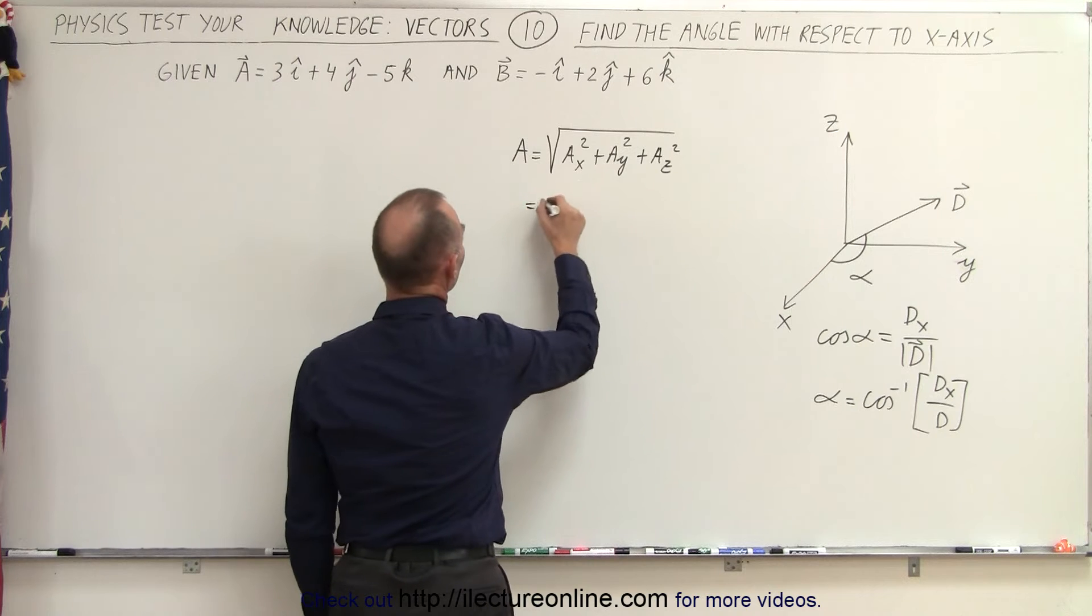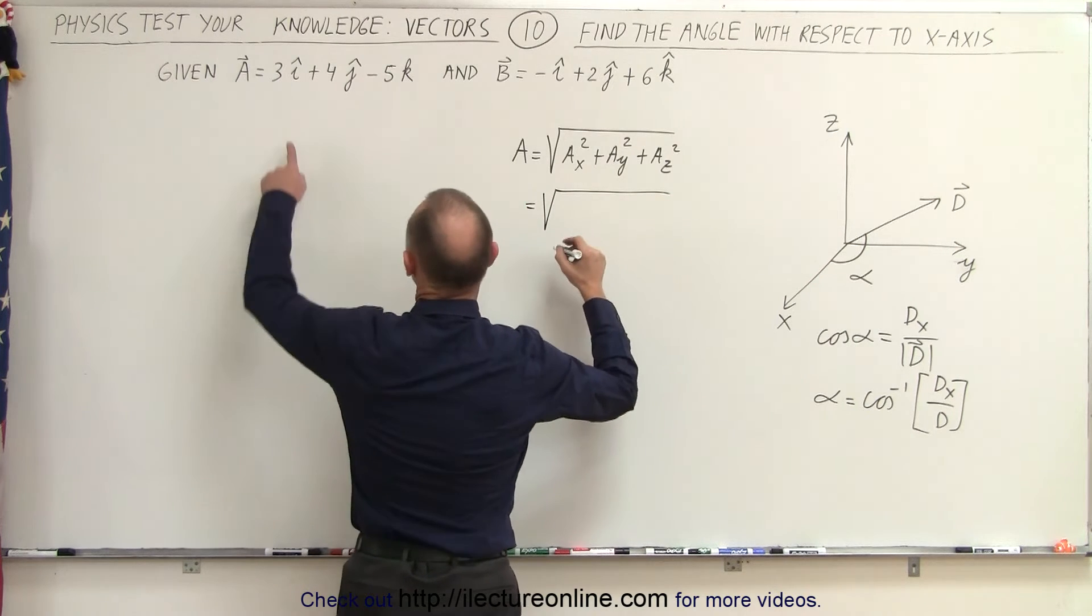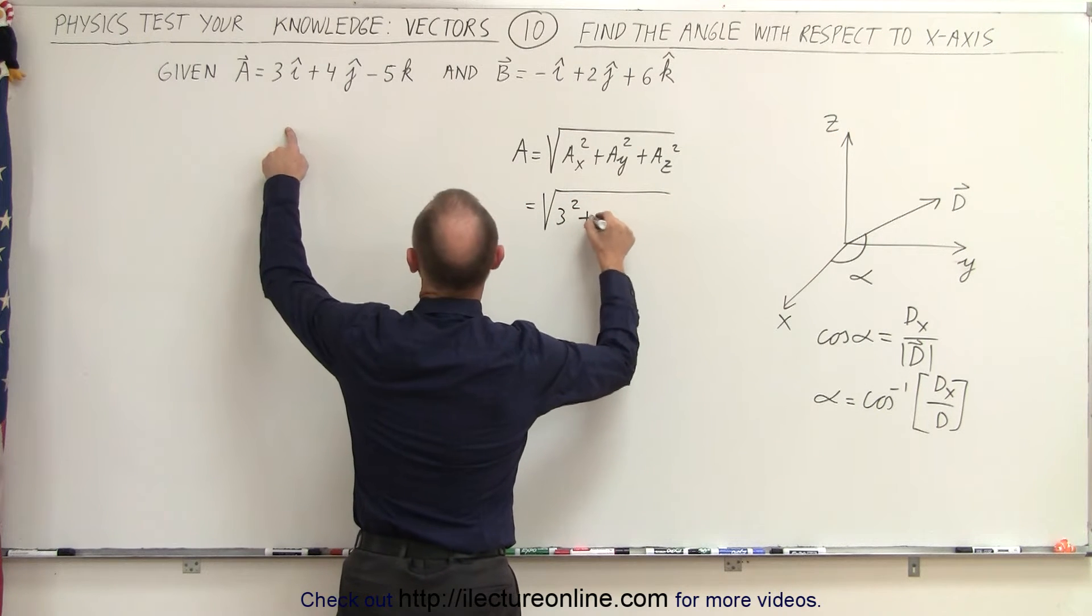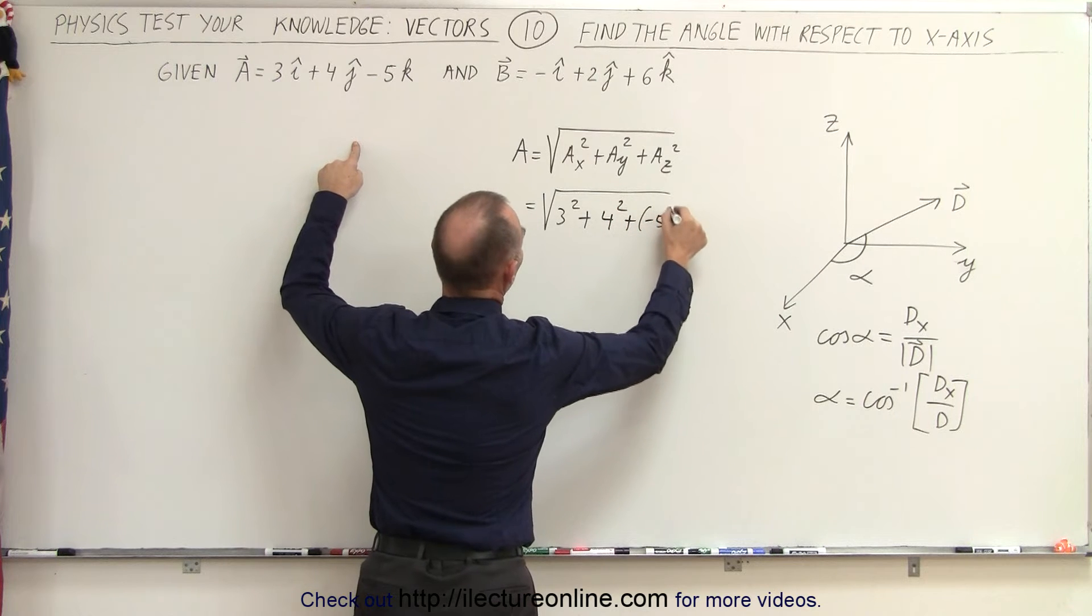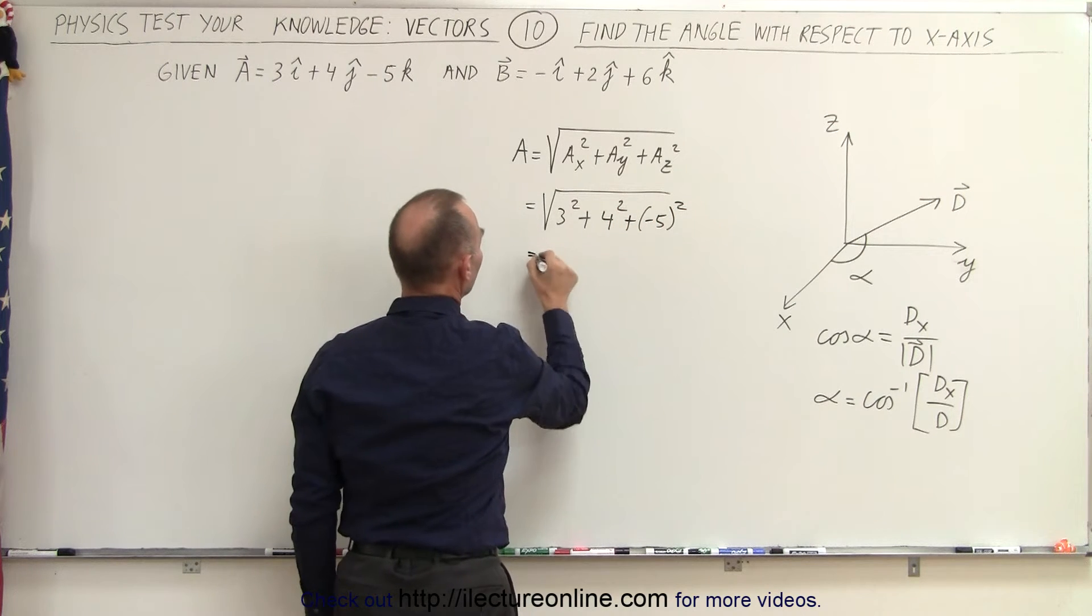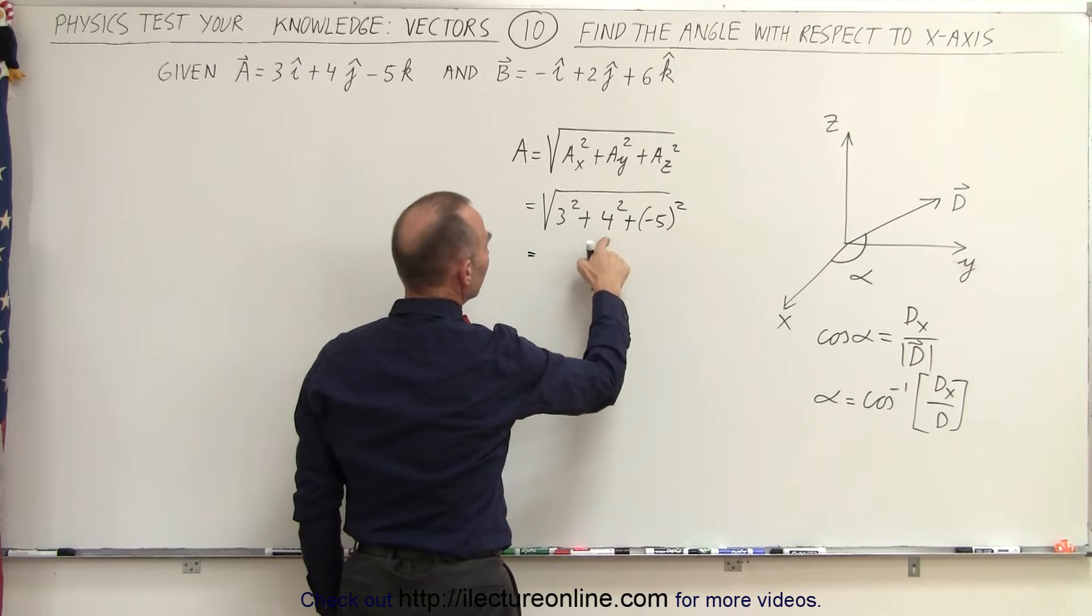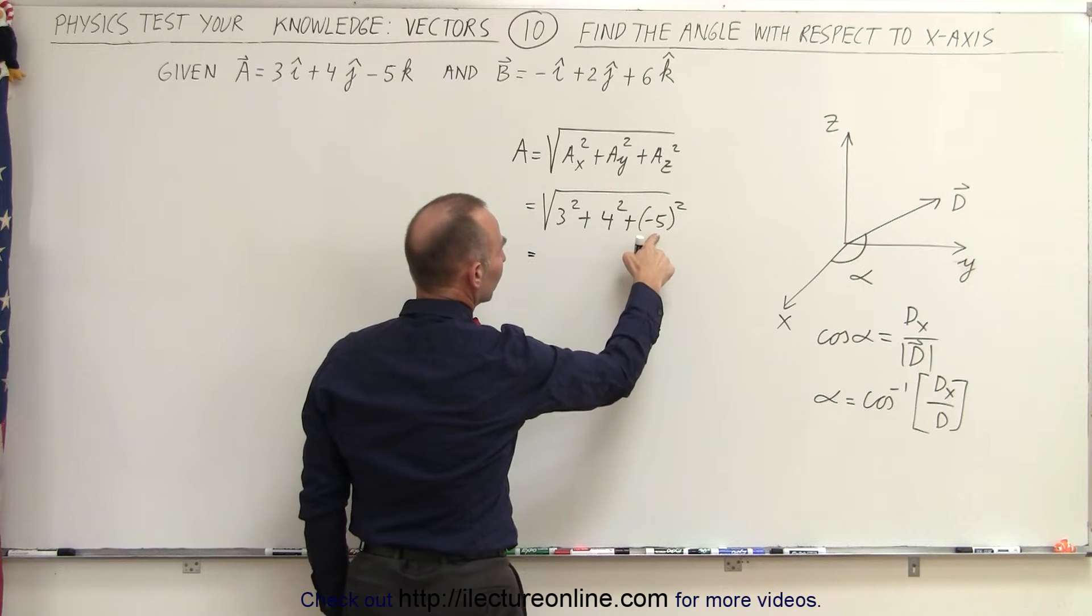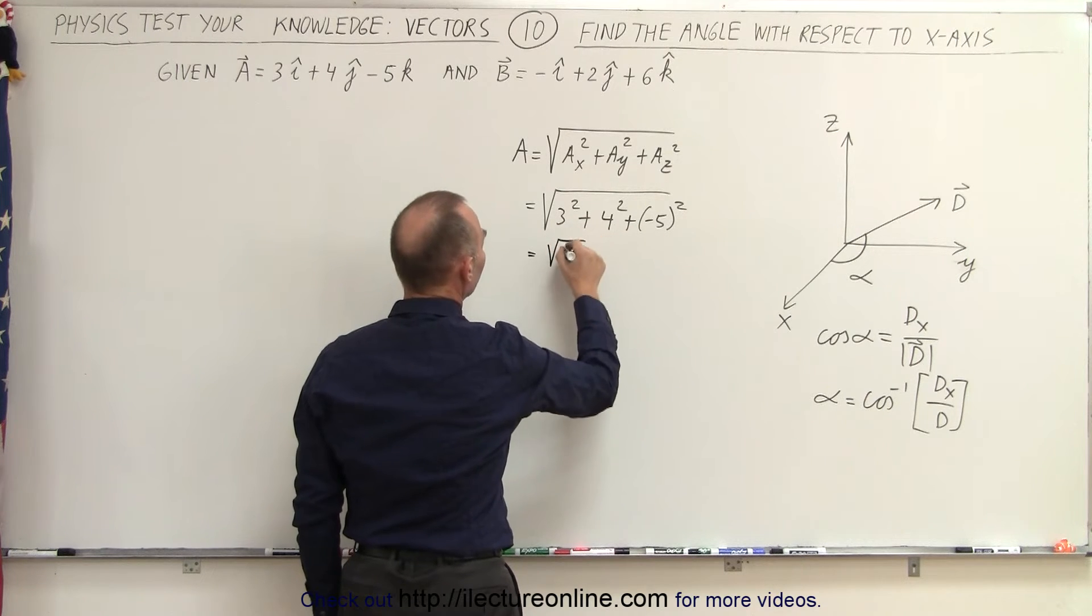So in this case, this is equal to the square root of 3 squared plus 4 squared plus negative 5 squared. So that is equal to 16 plus 9 is 25 plus 25, that would be the square root of 50.